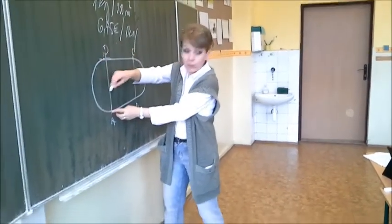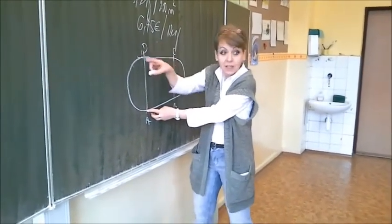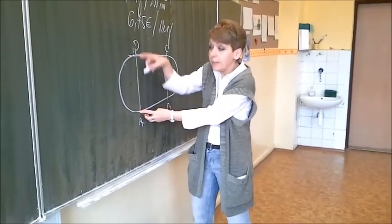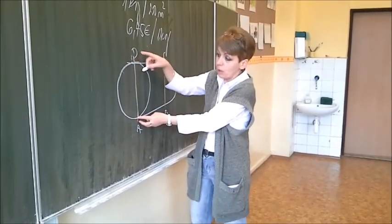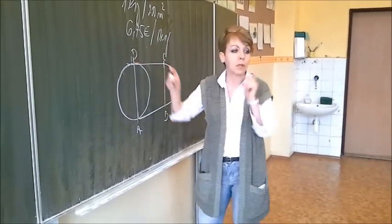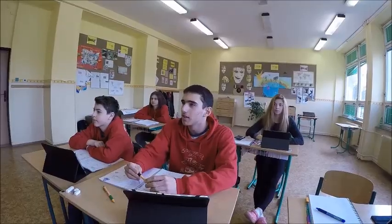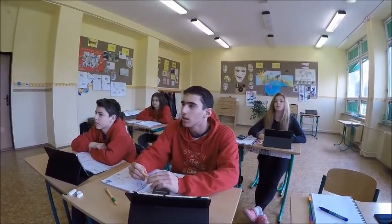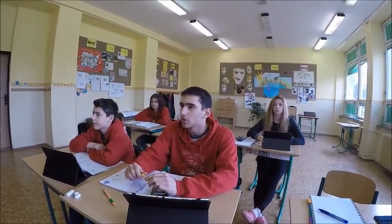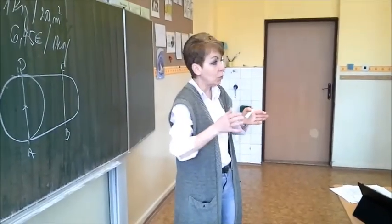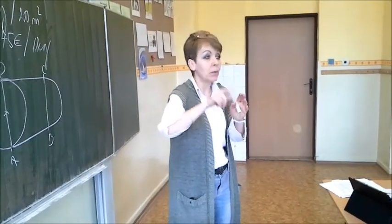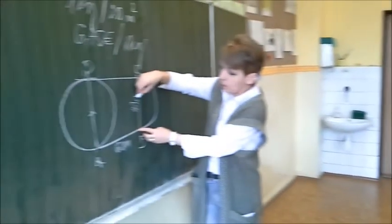The diameter of this circle equals the width of this rectangle. What is diameter? Diameter is the line which crosses the center of the circle and joins two ends of the circle. And what is radius? A radius is half of a diameter. What values did you measure? We measured: length of the rectangle is 60 meters, and width of the rectangle is 41 meters.